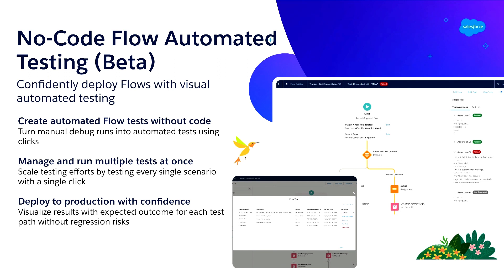In summer 2022, we are launching — for the first time in Salesforce — a low-code or no-code declarative way for you to create automated testing within Flow. This way, you don't have to use Apex anymore. You still can, but you don't have to. And you can manage and run all of your tests at once, and deploy to production with confidence.